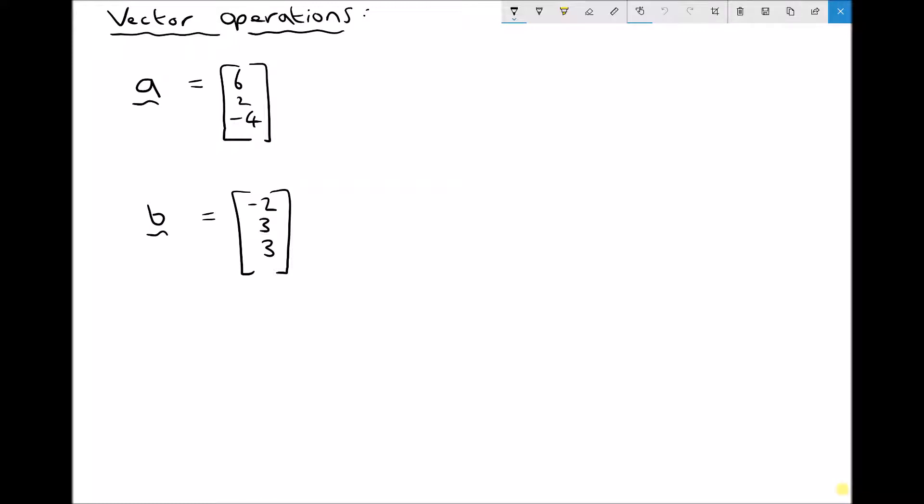Now first of all on the screen we have two vectors. We have vector A represented by 6, 2, minus 4 and we have vector B represented by the column vector minus 2, 3, 3.